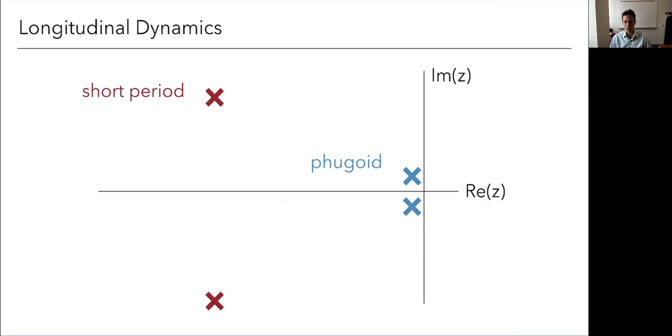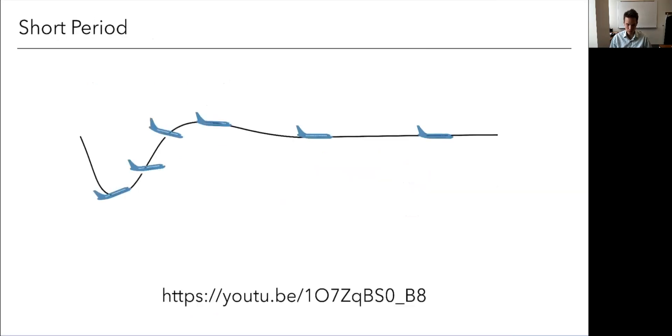Okay, by looking at this, we'd expect short period to have a lot of damping. It's very stable, far over on the left half plane. Fugoid looks like it's really close to that axis, so not a lot of damping. Even maybe close to being unstable. And indeed, that's what we see. The short period mode is pretty uninteresting. It's highly damped.